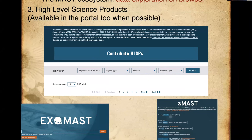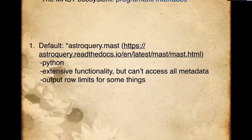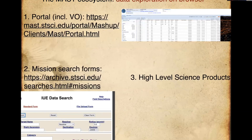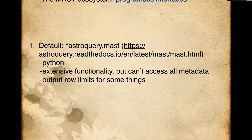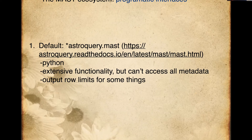There are also individual HLSP categories with their own websites. This is a complex ecosystem, but if you just need something simple, just go to the portal and get the observations for the objects you need. For programmatic interfaces, there's astroquery.mast in Python, which has extensive functionality, though it can't access all the metadata and has output row limits for some things. It's Pythonic and should probably be your default for programmatic interfaces.